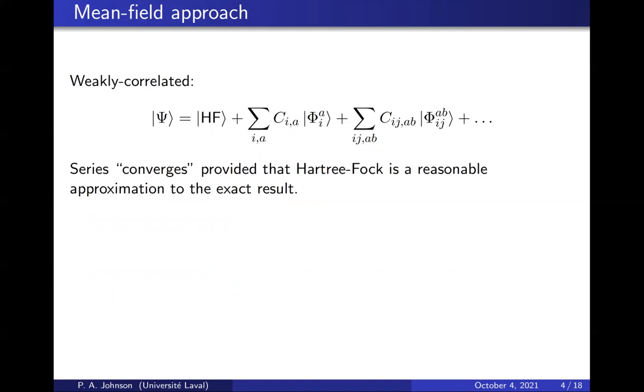So the way we solve any problem in physics is we start from a solution of a system that is easy and we systematically correct it until we get the desired accuracy. This approach will only work if you start from a good enough starting point, something that is qualitatively reasonable. Otherwise, there is no reason to believe that it will converge or provide anything reasonable. For weakly correlated systems, Hartree-Fock is a good first approximation, and then you can systematically correct it with excited states from Hartree-Fock, other Slater determinants.